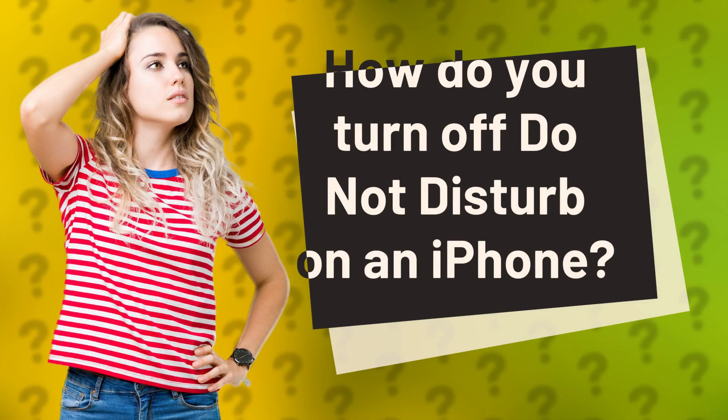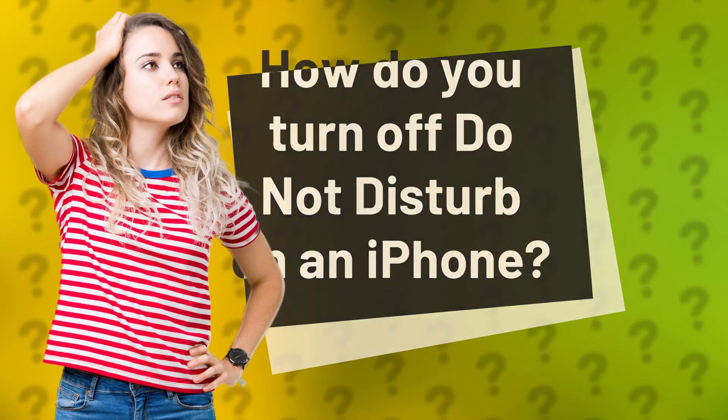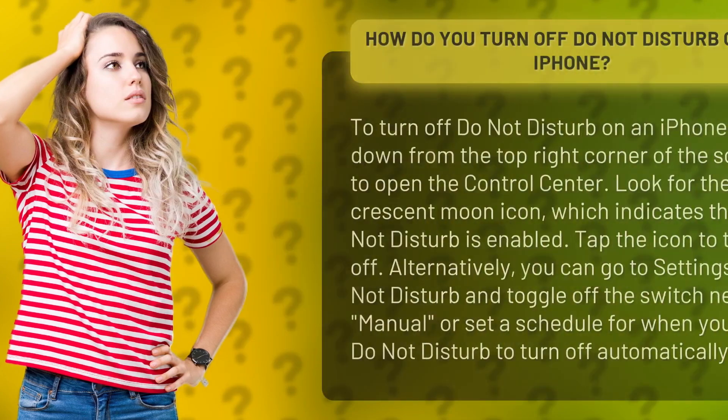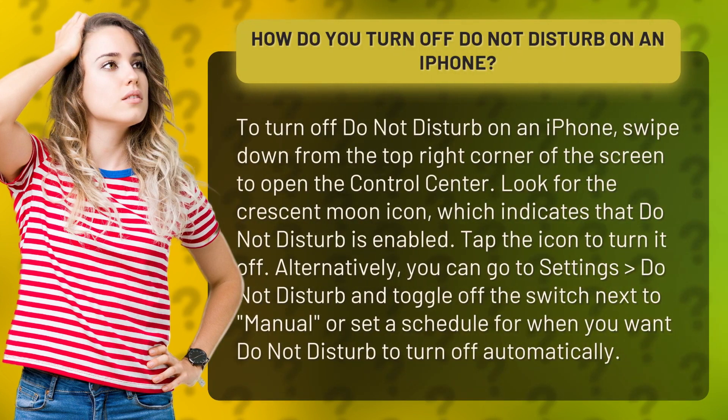How do you turn off Do Not Disturb on an iPhone? To turn off Do Not Disturb on an iPhone, swipe down from the top right corner of the screen to open the Control Center. Look for the crescent moon icon, which indicates that Do Not Disturb is enabled. Tap the icon to turn it off.